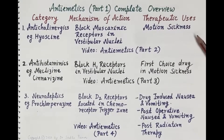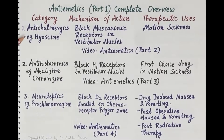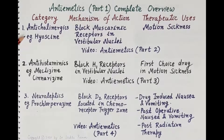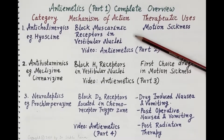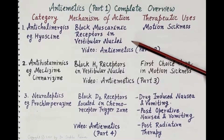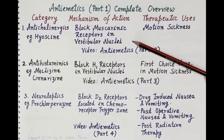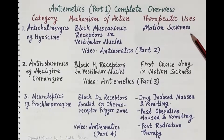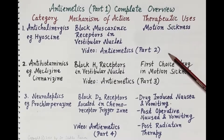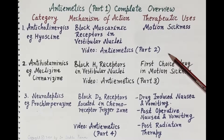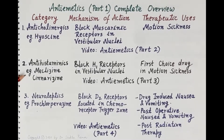Now let's discuss individual categories of antiemetic agents. The first category — anticholinergics, for example hyoscine — block muscarinic receptors in the vestibular nuclei and are indicated in motion sickness. Complete pharmacology of anticholinergics as antiemetics can be obtained from the video on antiemetics part 2.